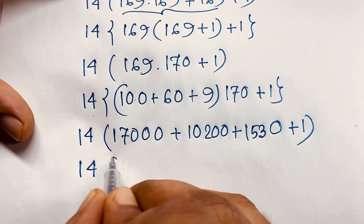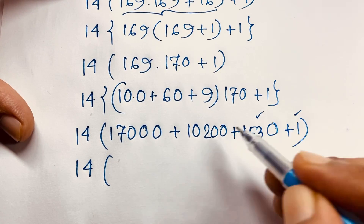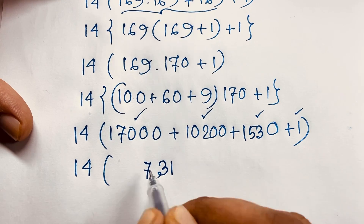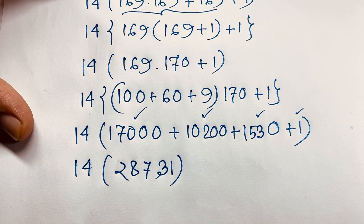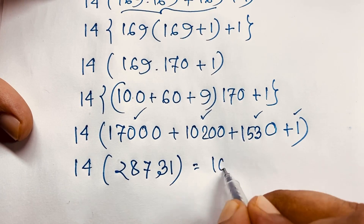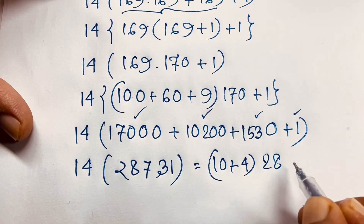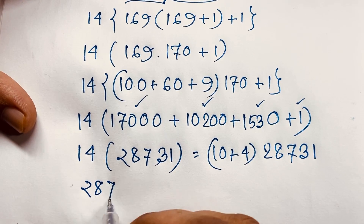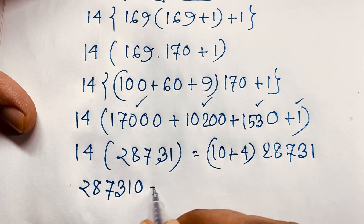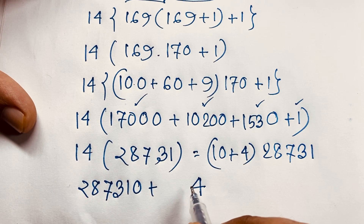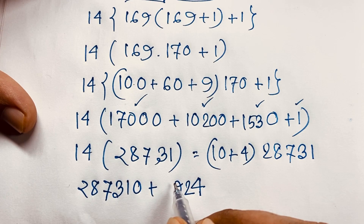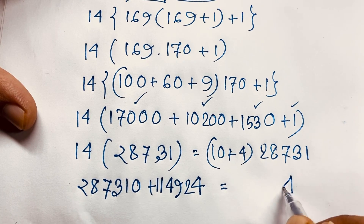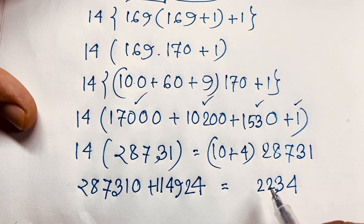Then here is 14 times this plus this plus this plus this, which is 28731. So 14 times 28731 — 14 will be 10 plus 4 times 28731. If I multiply 4 times 28731, it will be 2, 8, 7, 3, 1, 0 — wait, and 10 times 28731 gives us the partial products. Adding both together, we find it will be 4, 0, 2, 2, 3, 4.